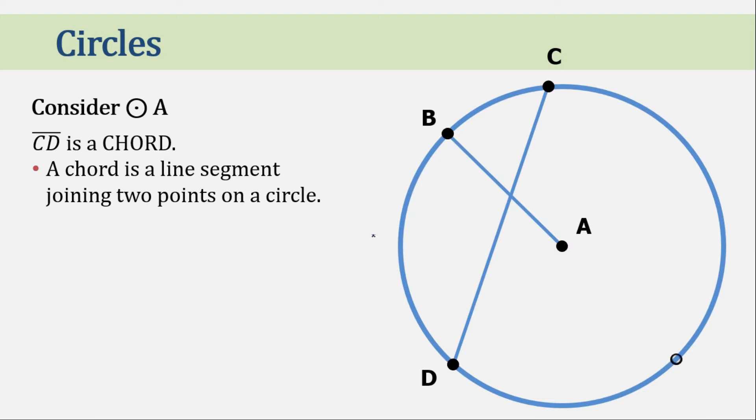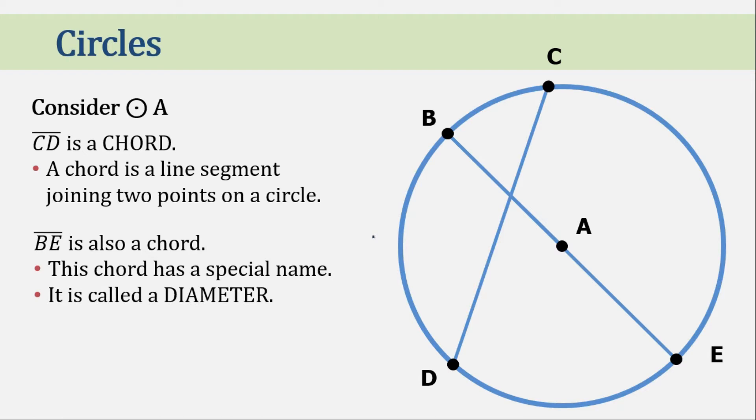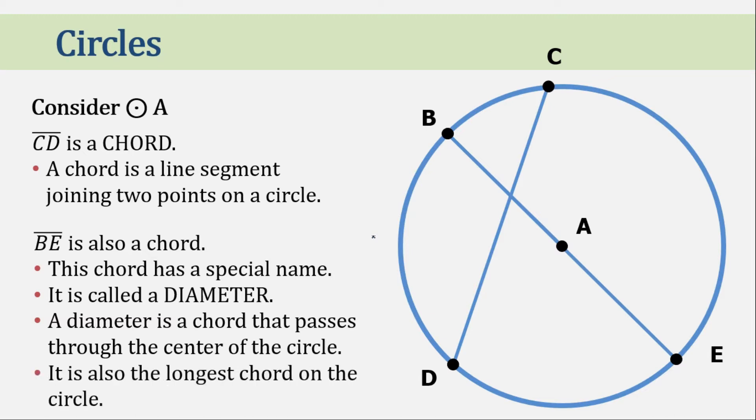Now let's pop up another point and name it point E and connect it to point B. Now segment EB is also a chord. This chord has a special name. It is called a diameter. A diameter is a chord that passes through the center of the circle. It is also the longest chord of the circle. So technically, all diameters are chords, but not all chords are diameters.